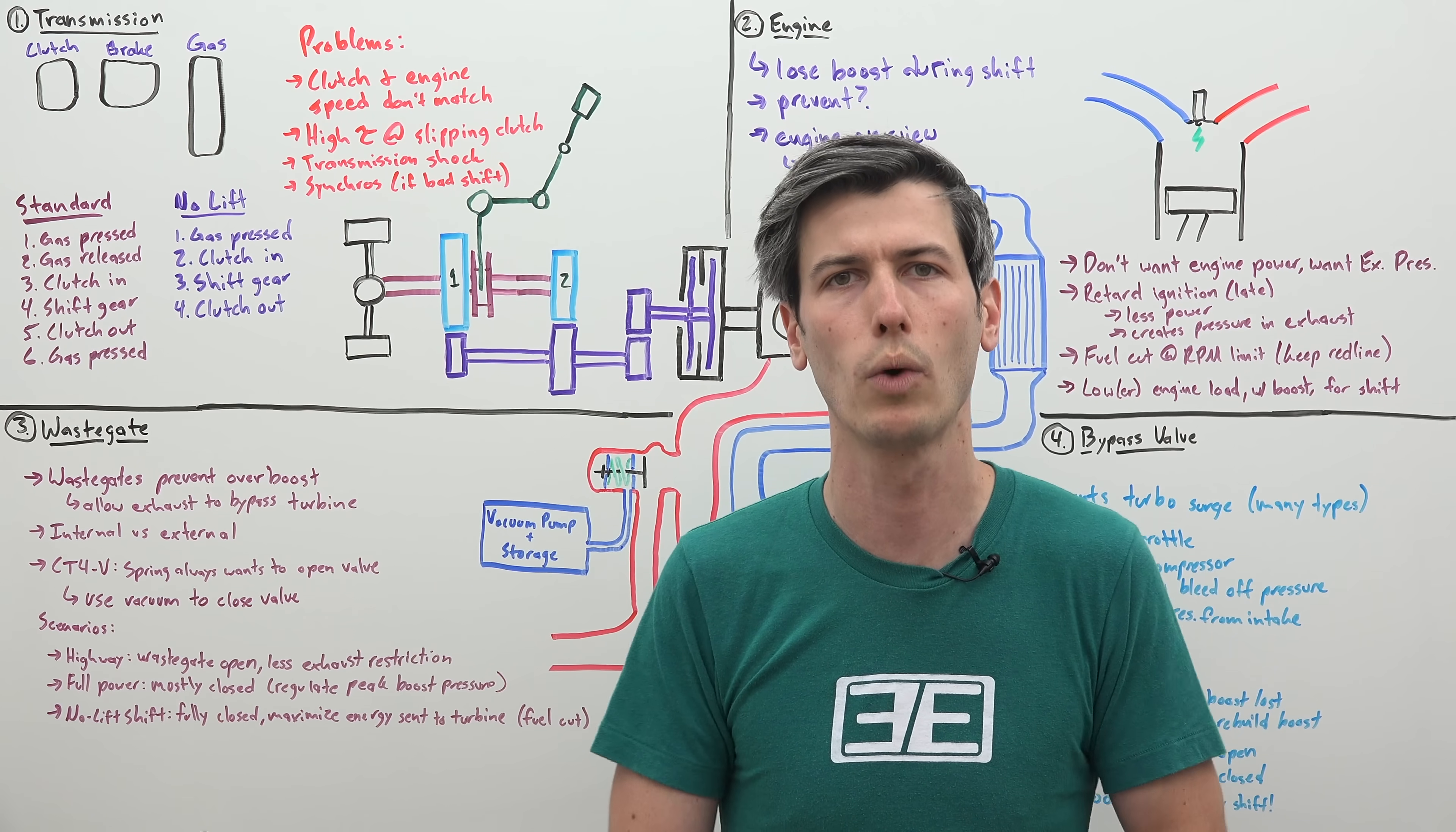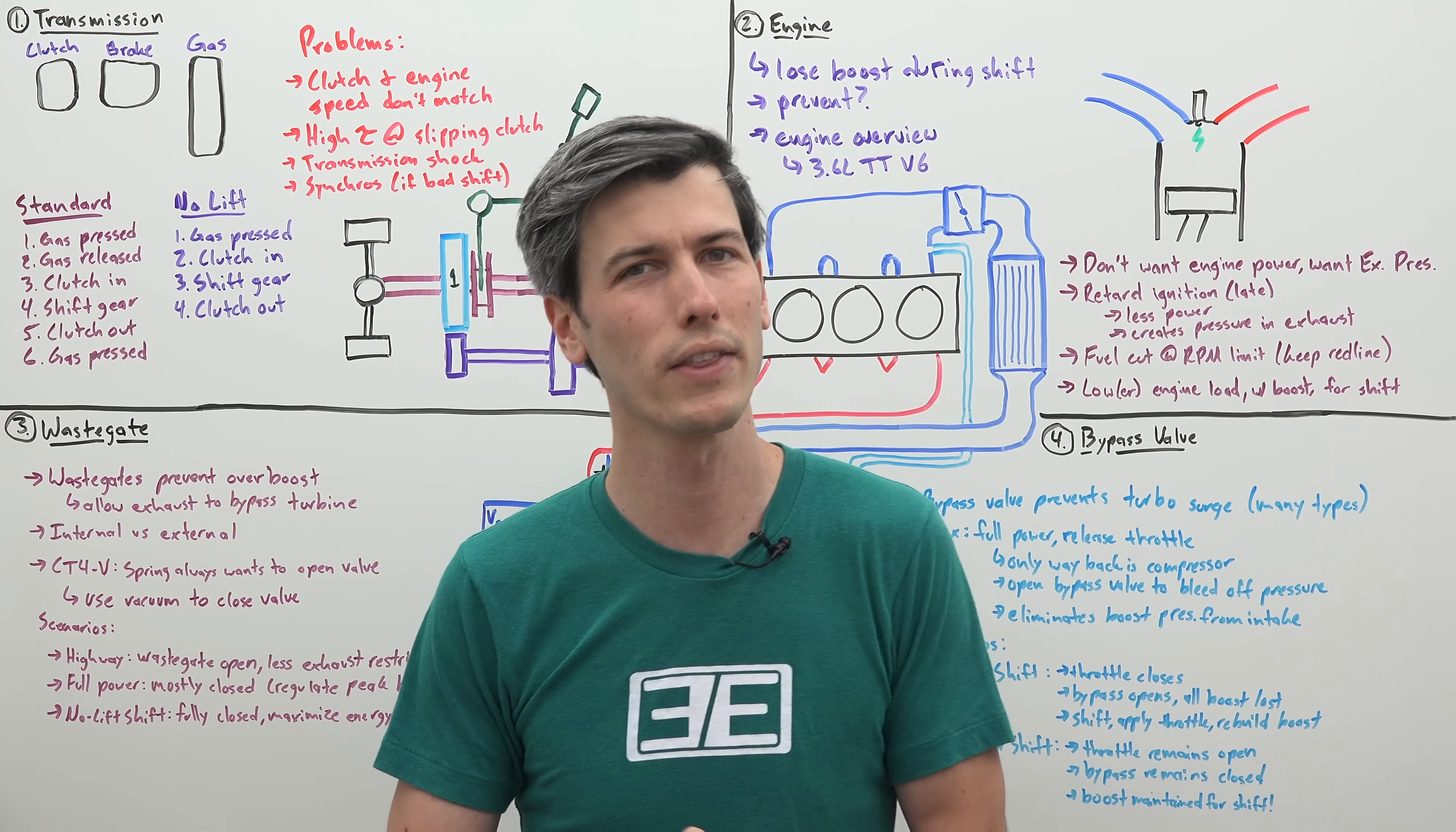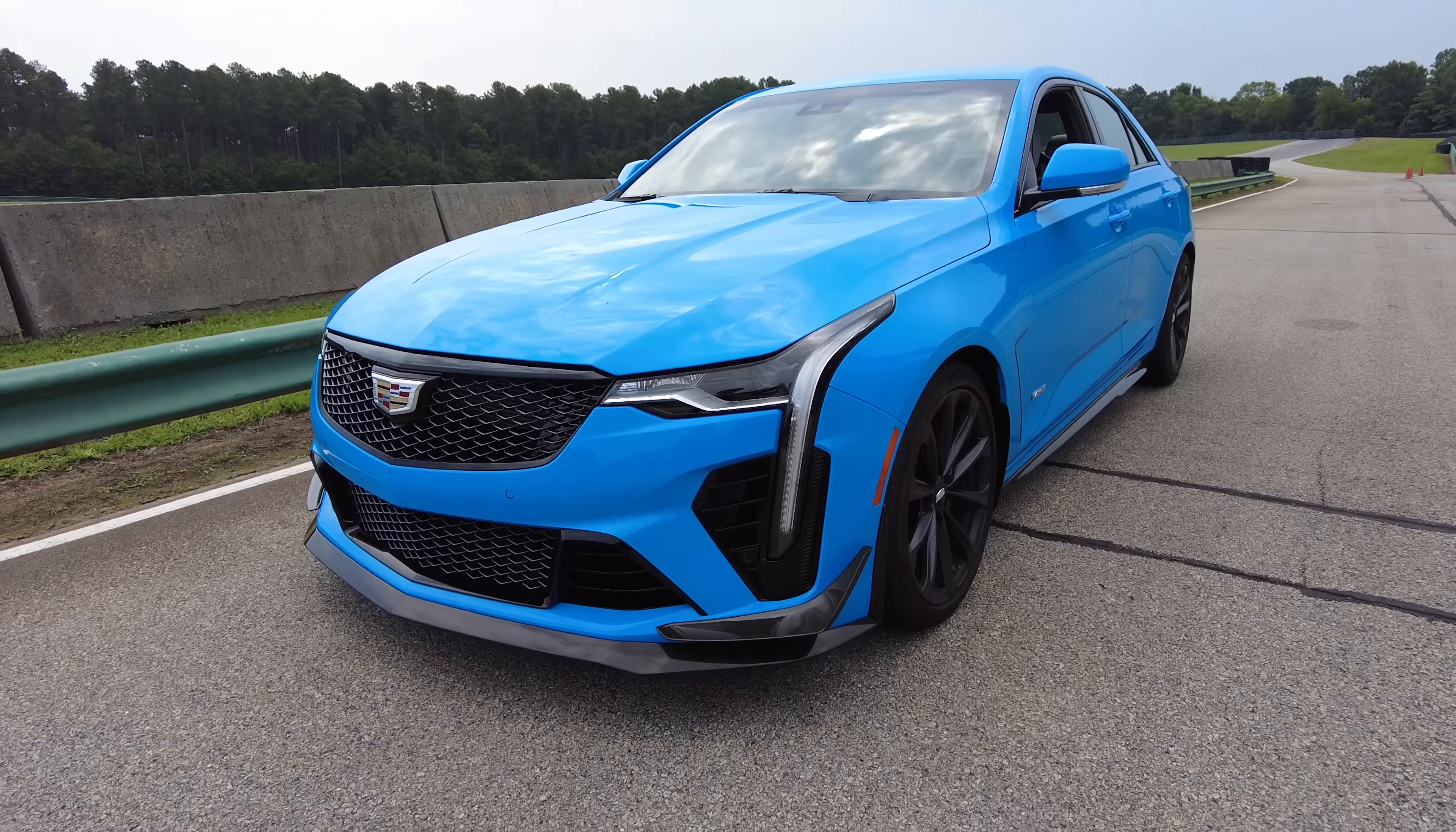I'm not sure what the first vehicle was to come equipped from the factory with no lift shift. However, around 2007 with the Chevy Cobalt SS, that actually came from the factory with no lift shifting. And recently I was able to try out the Cadillac CT4V Blackwing, which also is equipped with no lift shifting.